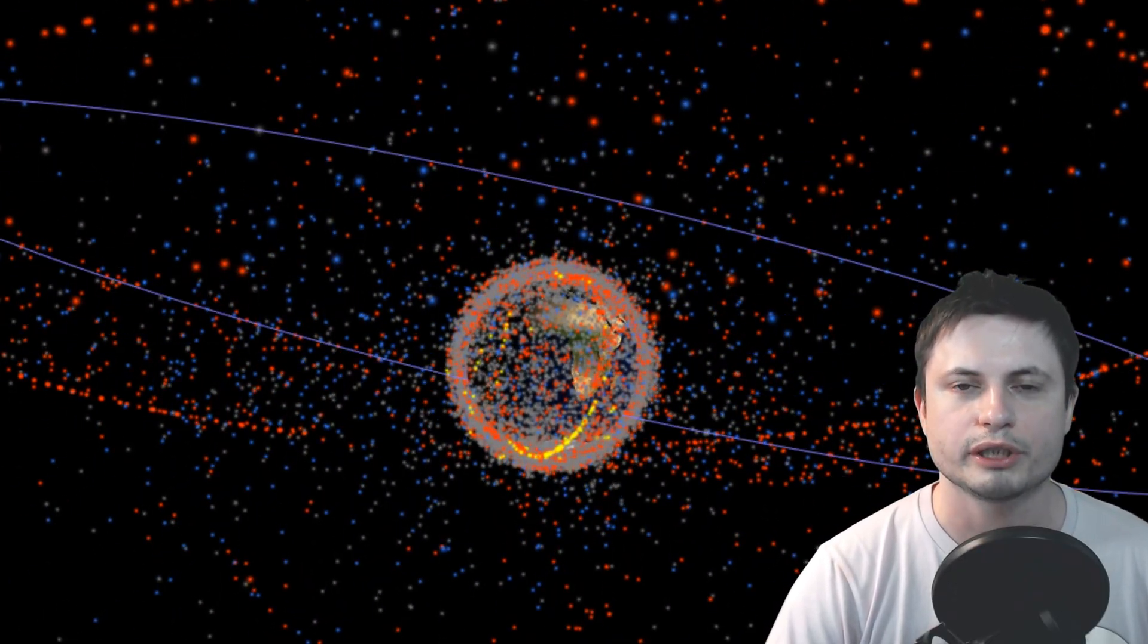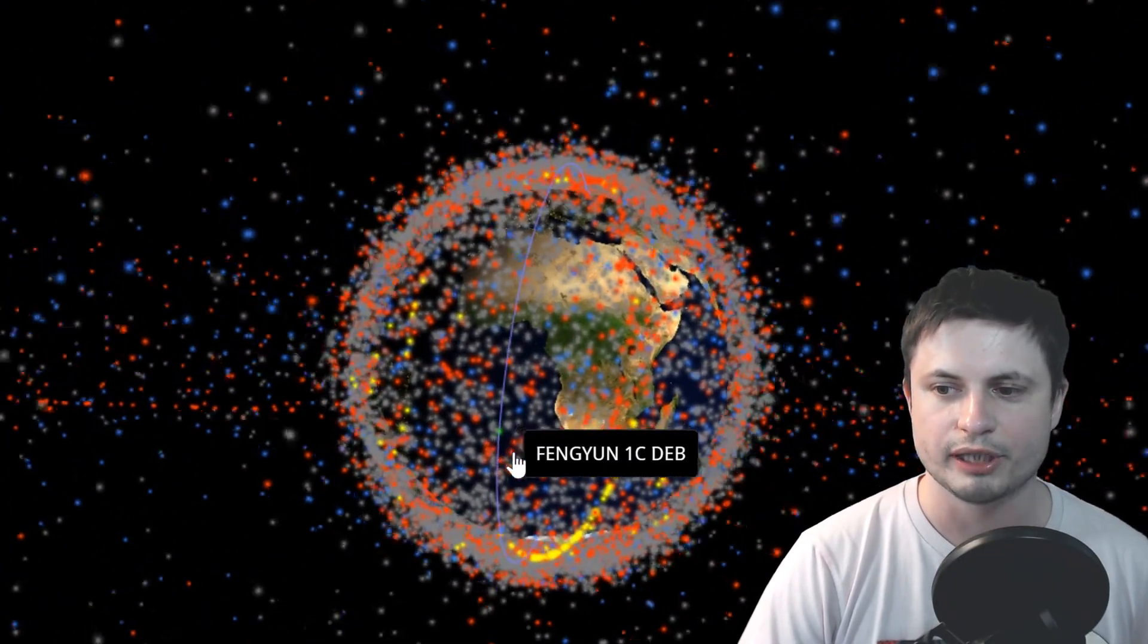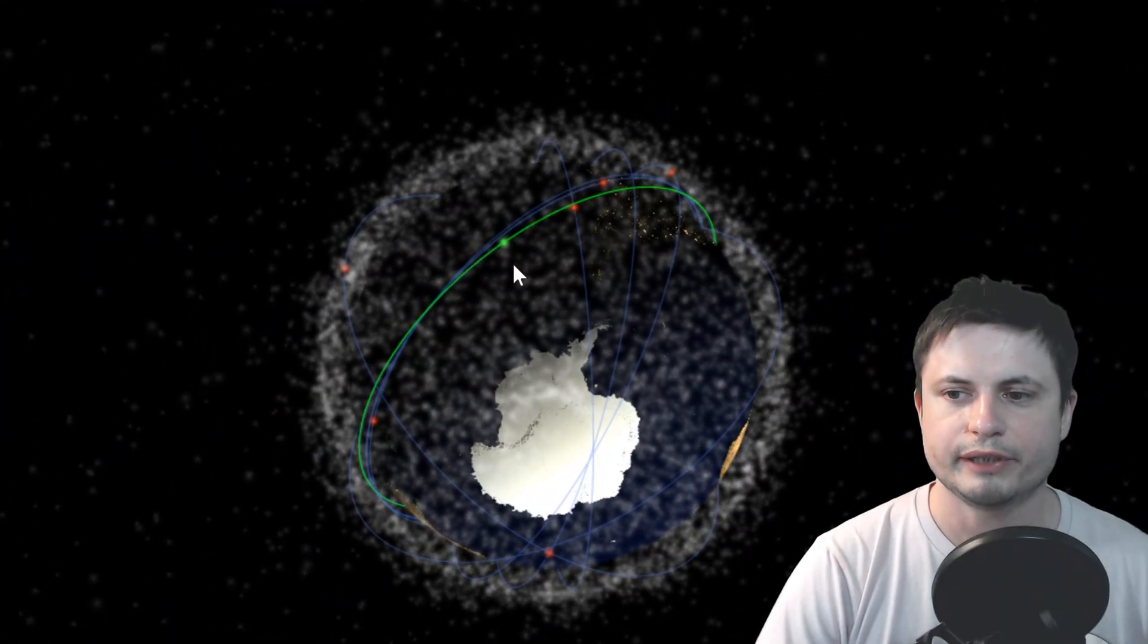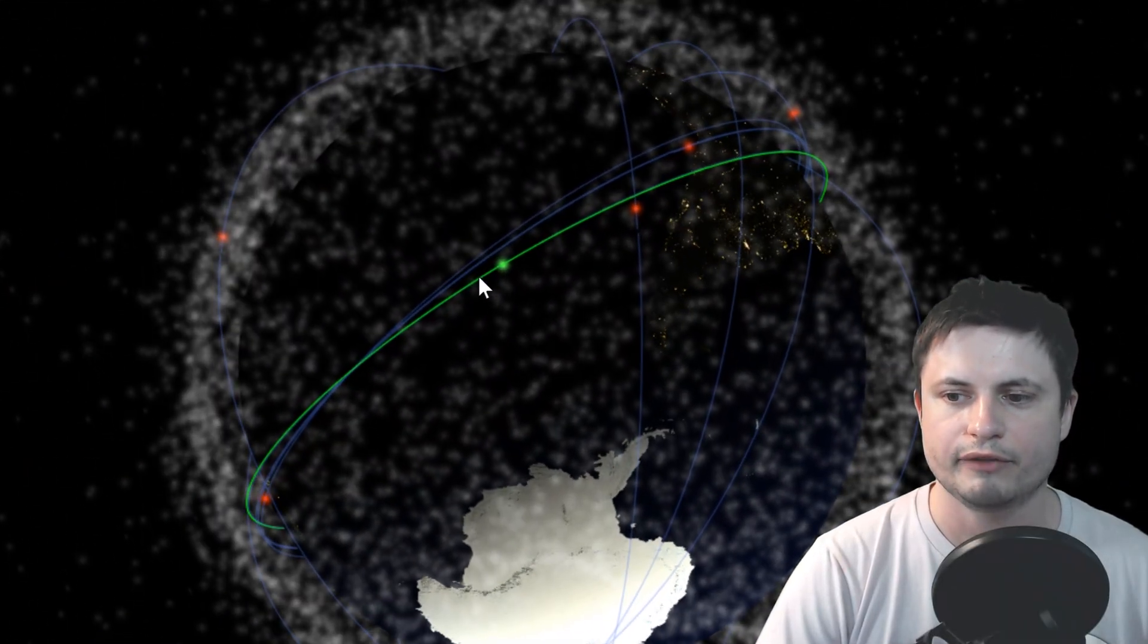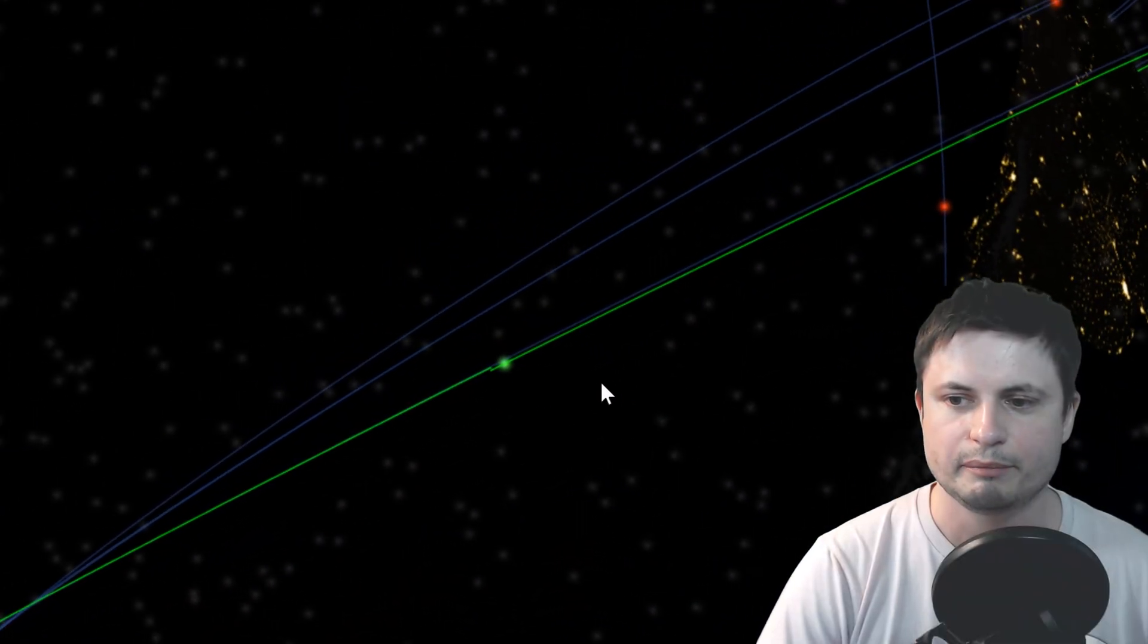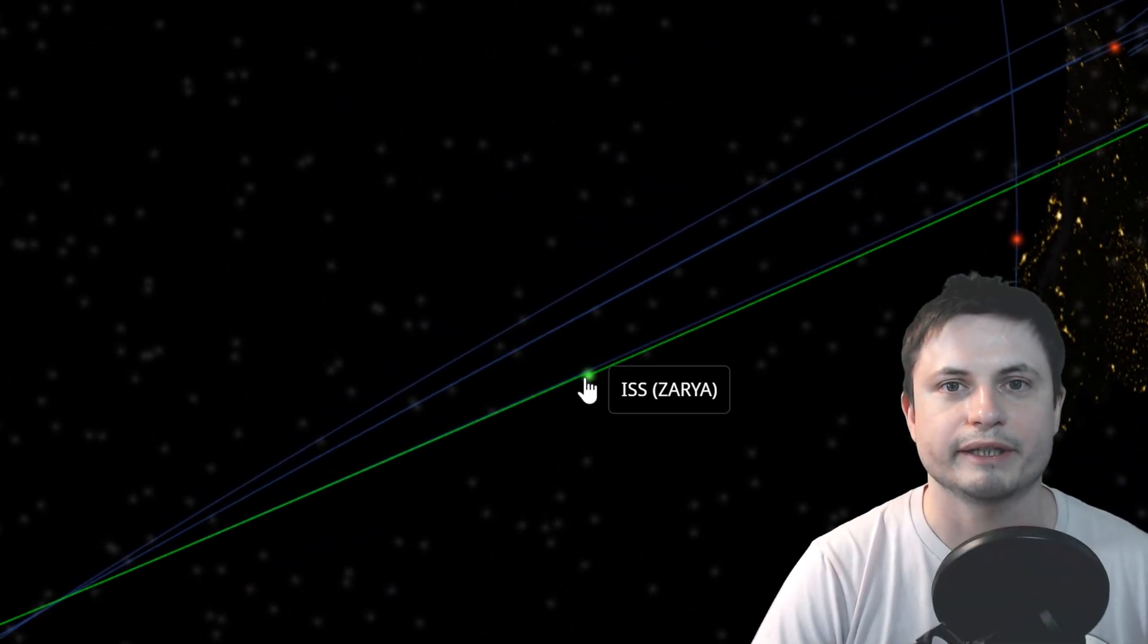So on that note, thank you for watching. Check out the website that I used right here in the description below. You can actually see pretty much every major satellite, including of course the International Space Station that's orbiting right there, very close to Antarctica and South America, somewhere in the Pacific Ocean. And you can actually use this website to even track it and possibly predict when it's right above you.